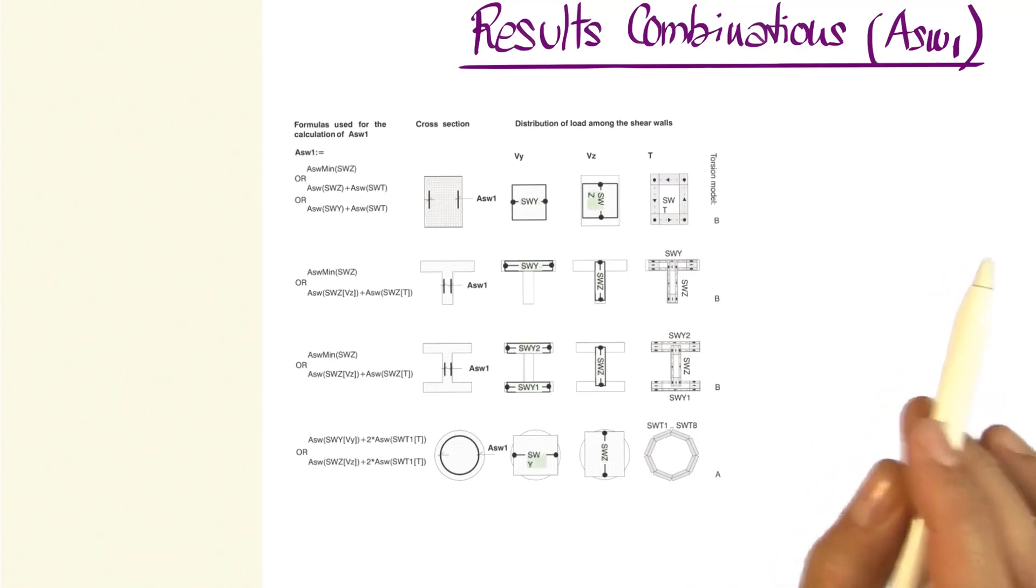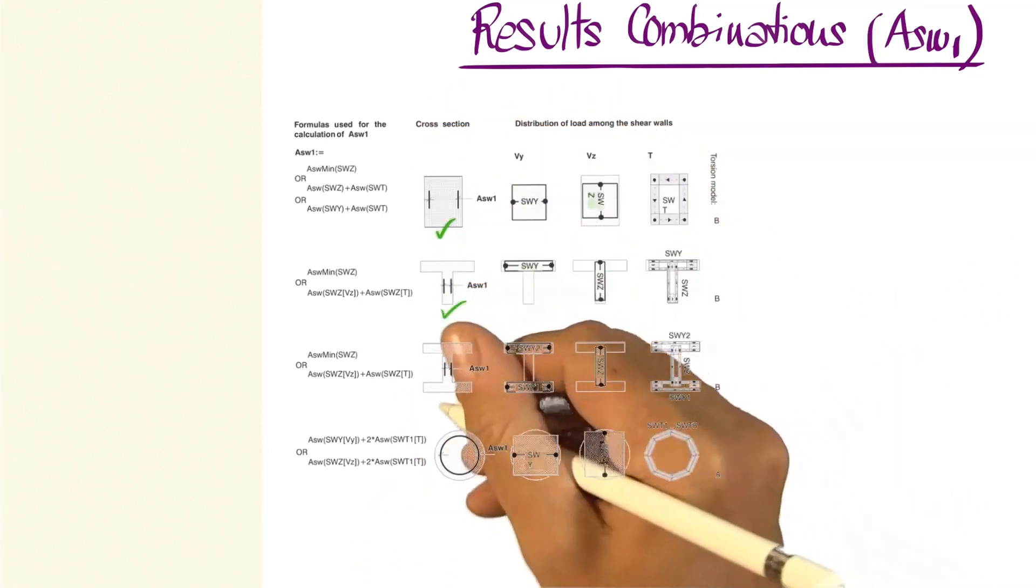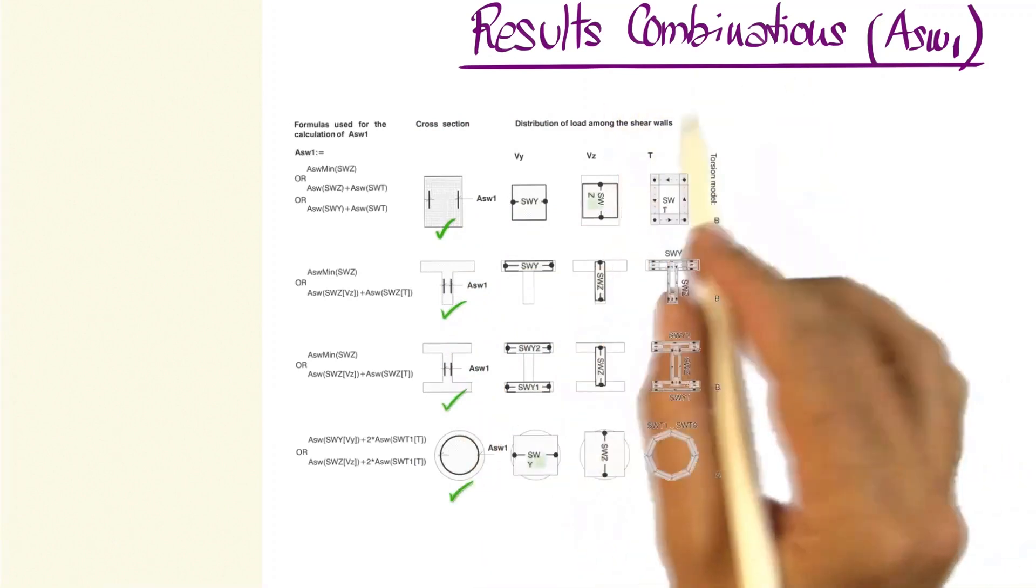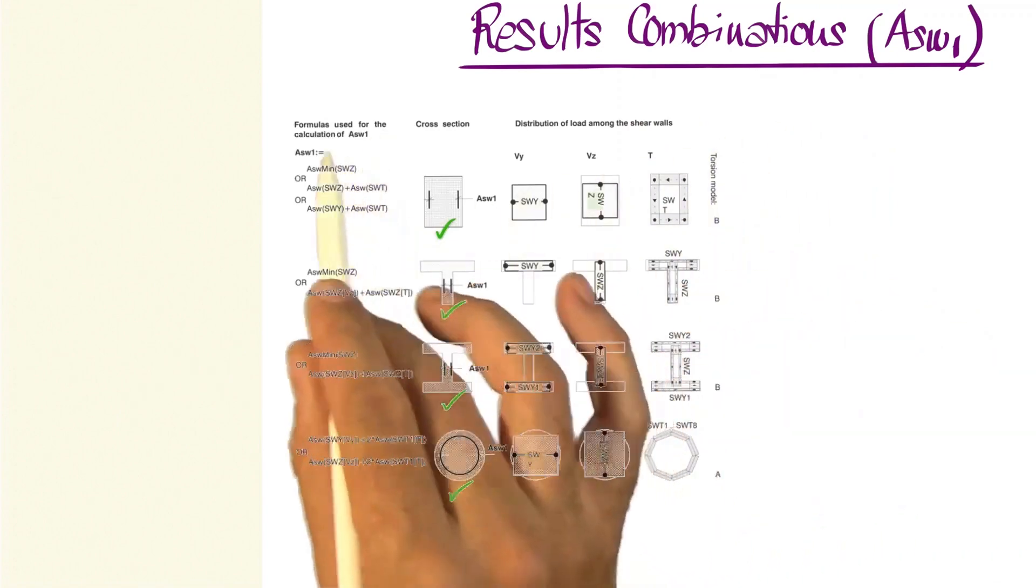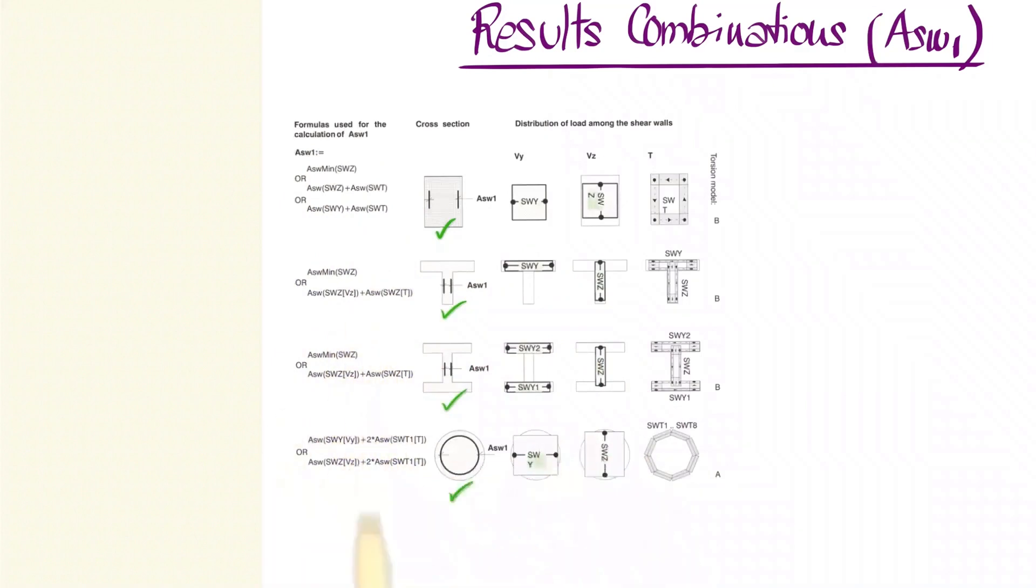This table shows four of the most typical cross sections that we'll find in Fagus. One rectangular cross section, one T, one double T, and one circular cross section. For all of them, the program will have a result combination it will call ASW1, which will have a certain formula associated with it.